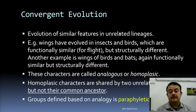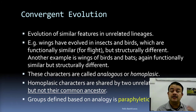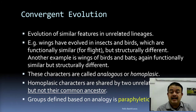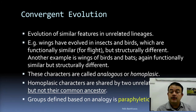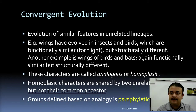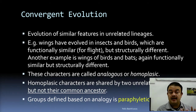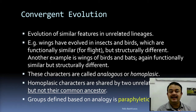Convergent evolution is the evolution of similar features in unrelated lineages. In biology, relationship means genealogical relationship — relationship because of shared ancestry. If two of your friends look quite similar, they are not necessarily related. Morphological similarity cannot be called a relationship.